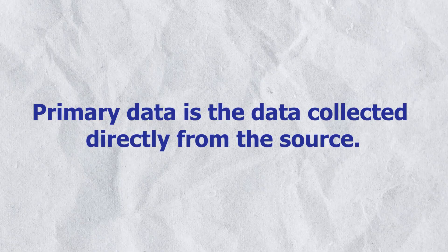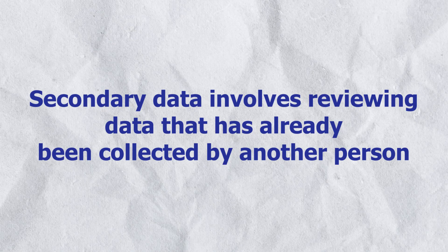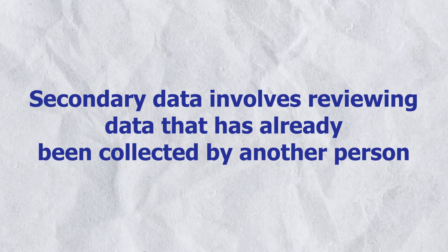Most data collection methods in qualitative research allow the researcher to collect primary data, which is data collected directly from the source. For example, if you conduct an interview, you will collect primary data from research participants. The only qualitative data collection method that collects secondary data is the archival review. Secondary data involves reviewing data already collected by another person, such as information provided on a government website.